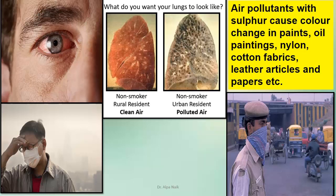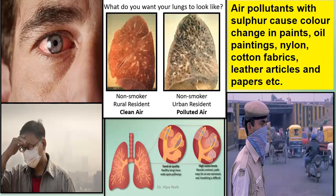Look at this picture of lungs. The first picture shows a non-smoker and a rural resident where clean air is present. In the second picture, an urban resident — and see how the lung is affected because of polluted air. Good air quality means healthy lungs have wide open pathways, your breathing is proper and you can live a healthy life.